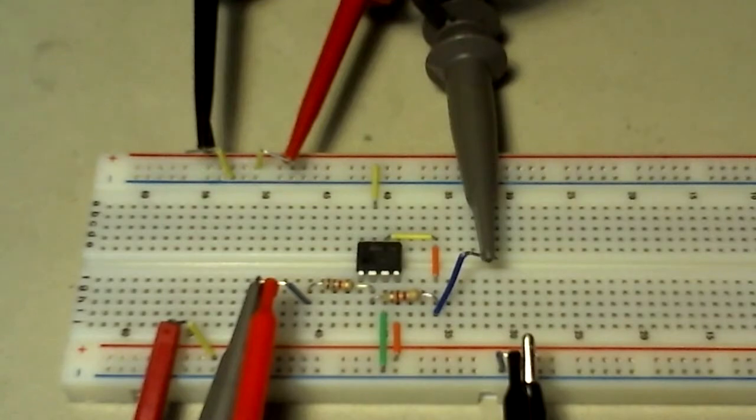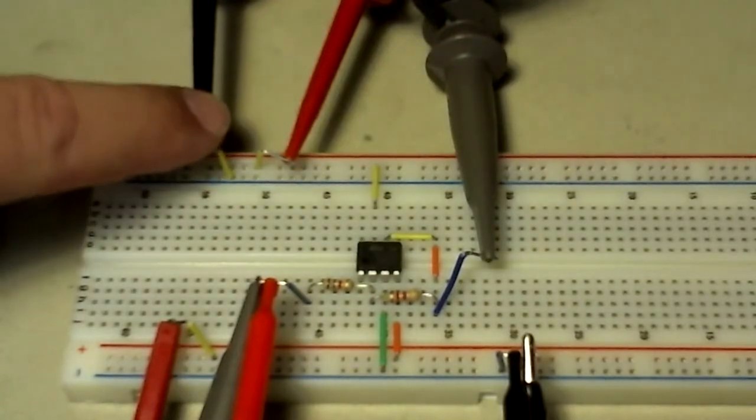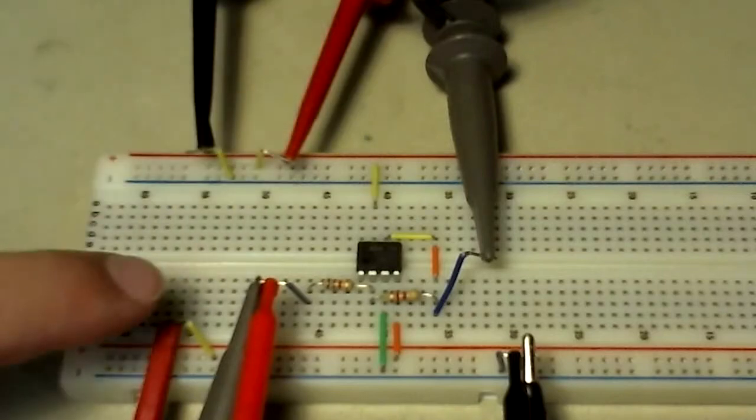Here is a built inverting amplifier. This is the power ground, positive voltage supply, and the negative voltage supply.